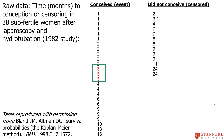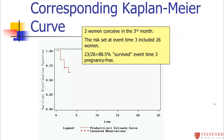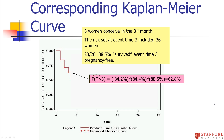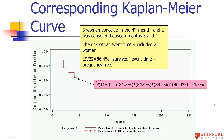In the third month, three women conceive. One woman was censored between the second and third month, so she's not included in the risk set. There were only 26 women at risk of getting pregnant in month three. Three got pregnant, 23 did not — survival probability of 23 out of 26 or 88.5%. Multiplying that with the others gives a cumulative probability of 62.8%. In the fourth month, with one person censored at month three, the risk set is down to 22 women — three get pregnant, 19 do not, and the probability drops to 54%.